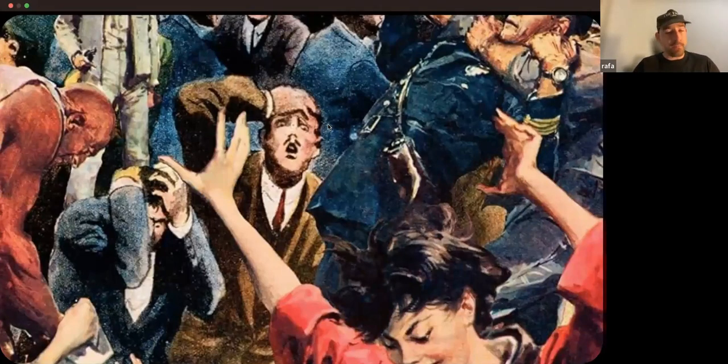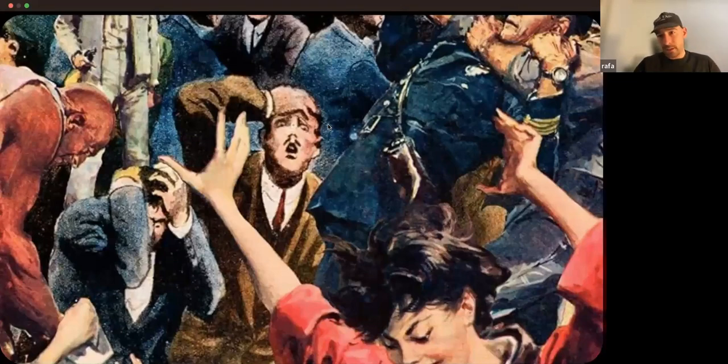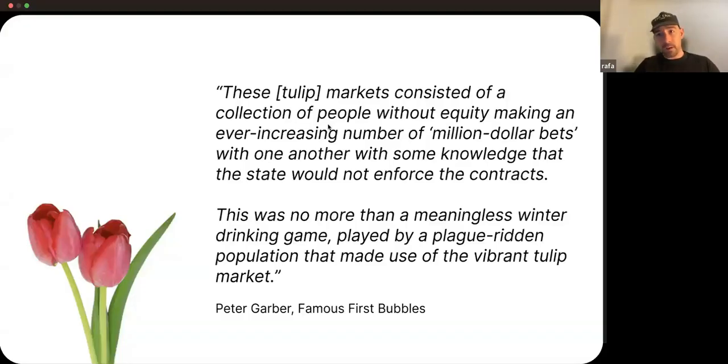It's tempting to think that swarms may be solely a modern phenomenon, but unprotocolized collective action in networked environments can actually be found historically. One book, Outbreak: The Encyclopedia of Extraordinary Social Behavior, recommended by Toby Shorin from Other Internet, had a couple of different examples, instances of what we might call proto-swarms. The tulip craze here is a good example. Peter Garber, author of Famous First Bubbles, talks about these tulip markets consisted of a collection of people without equity making an ever-increasing number of million-dollar bets with one another with some knowledge that the state would not enforce their contracts. There was no more than a meaningless winter drinking game played by plague-ridden population that made use of the vibrant tulip market. Sounds a bit familiar.